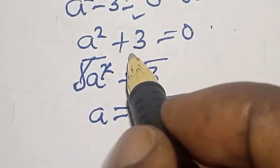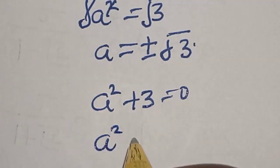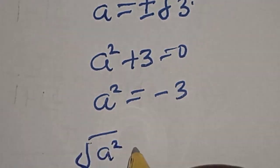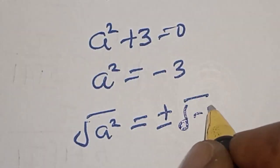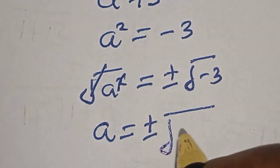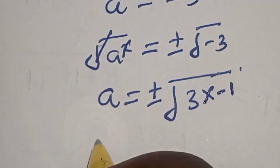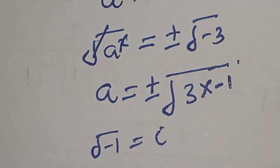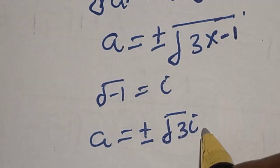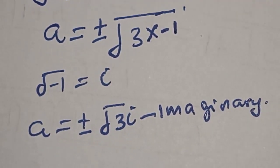Now, also for the second case, a squared plus 3 is equal to 0, so a squared is equal to minus 3. Now let's take the square root of both sides. Square root of a squared is equal to plus or minus square root of minus 3. So a is equal to square root of 3 multiplied by minus 1. And remember that square root of minus 1 is equal to i. Then a is equal to plus or minus square root of 3 times i. So this is imaginary, and it's rejected.